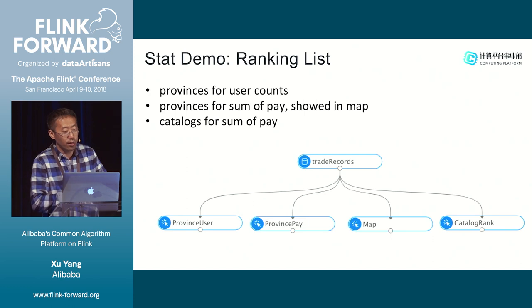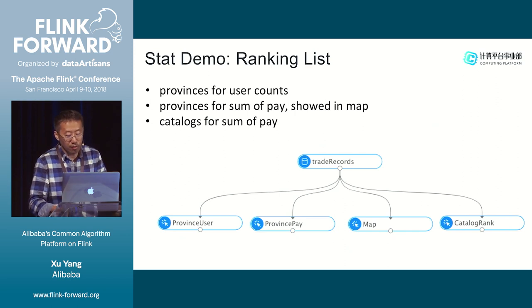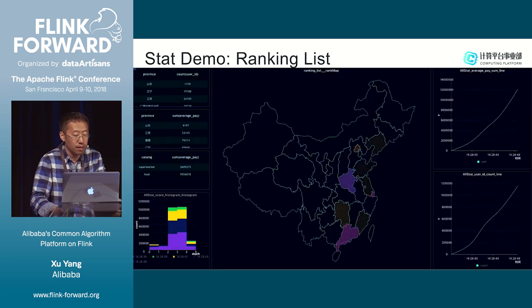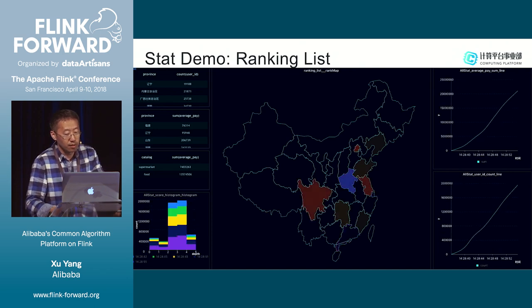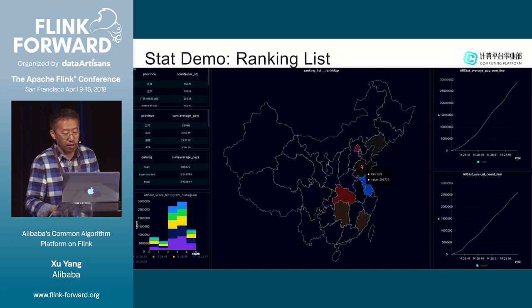Next we show the ranking list — how different premiums relate to user trade count and payment, also considering catalog. In the middle is a China map, where we show the trade count variance between provinces.